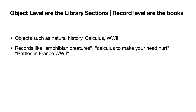Records are like the books within those sections. In the natural history section you might have books on amphibian creatures; for calculus, a book to make your head hurt; for World War II, battles in France. Object level security opens up access to each section — maybe only the sections you have classes for — and then you can only see the books related to that curriculum. That would be record level security.